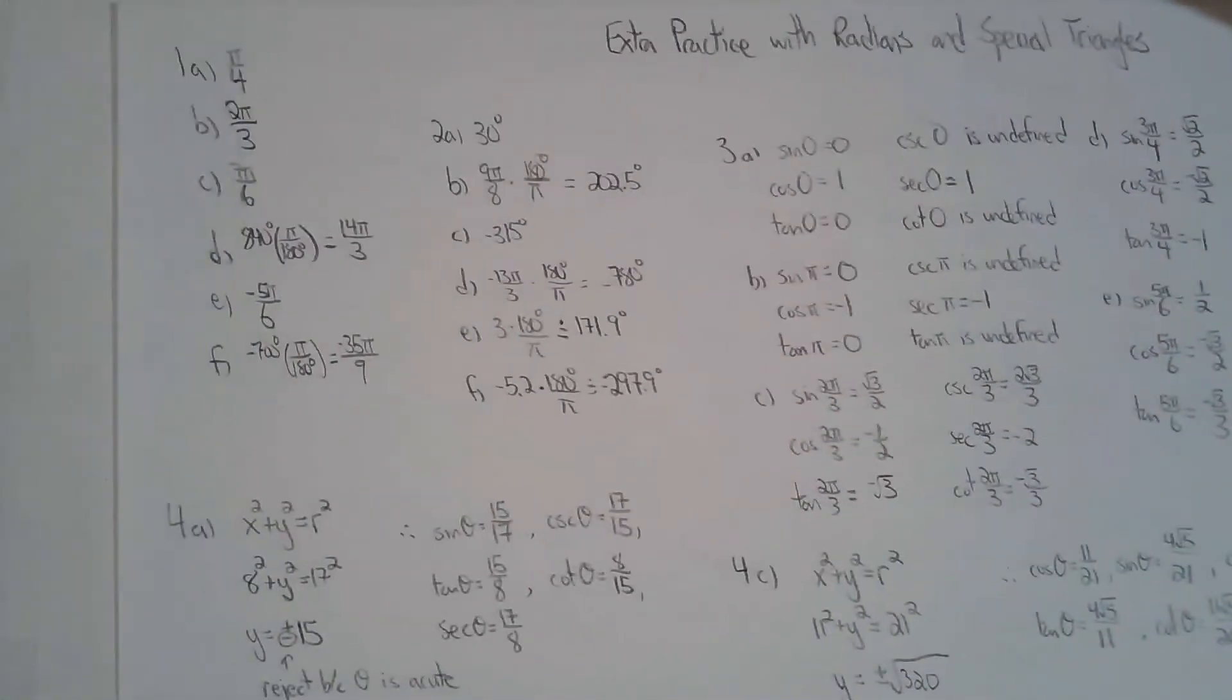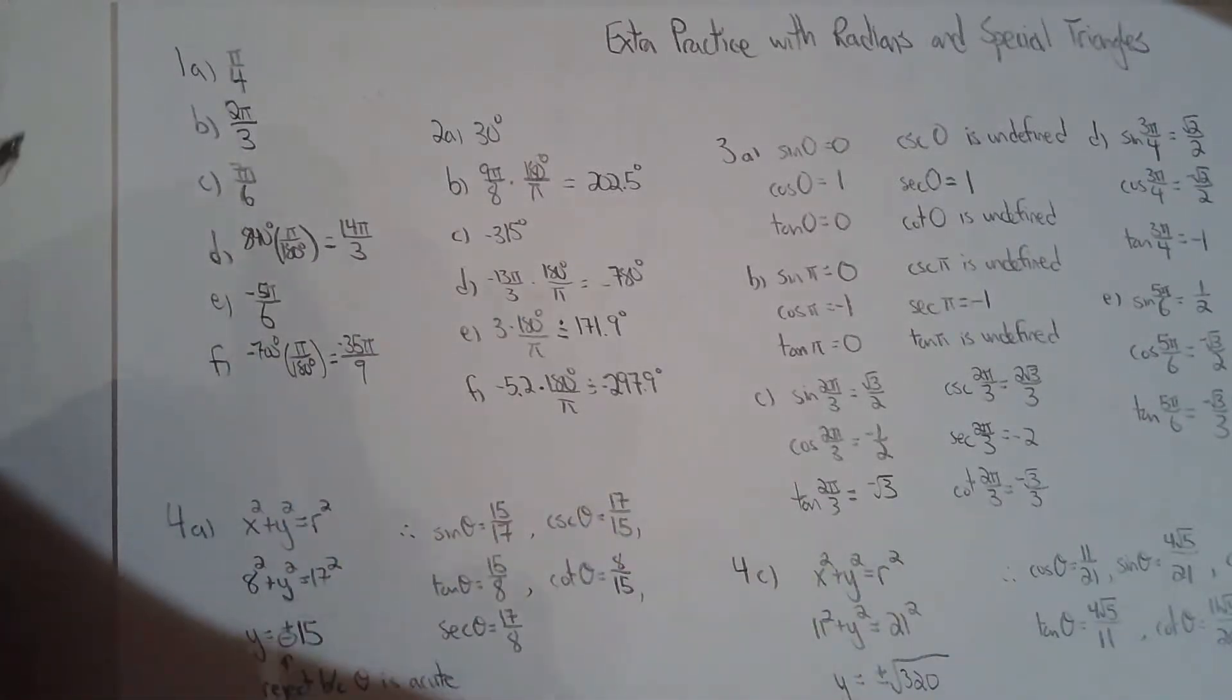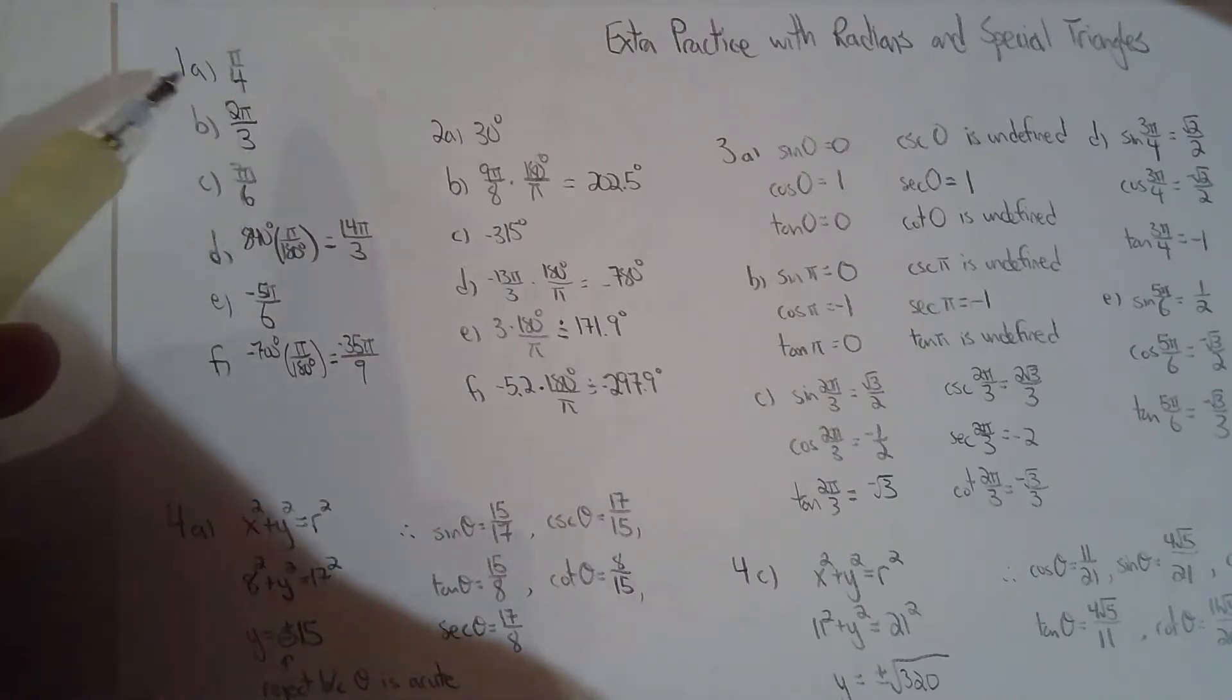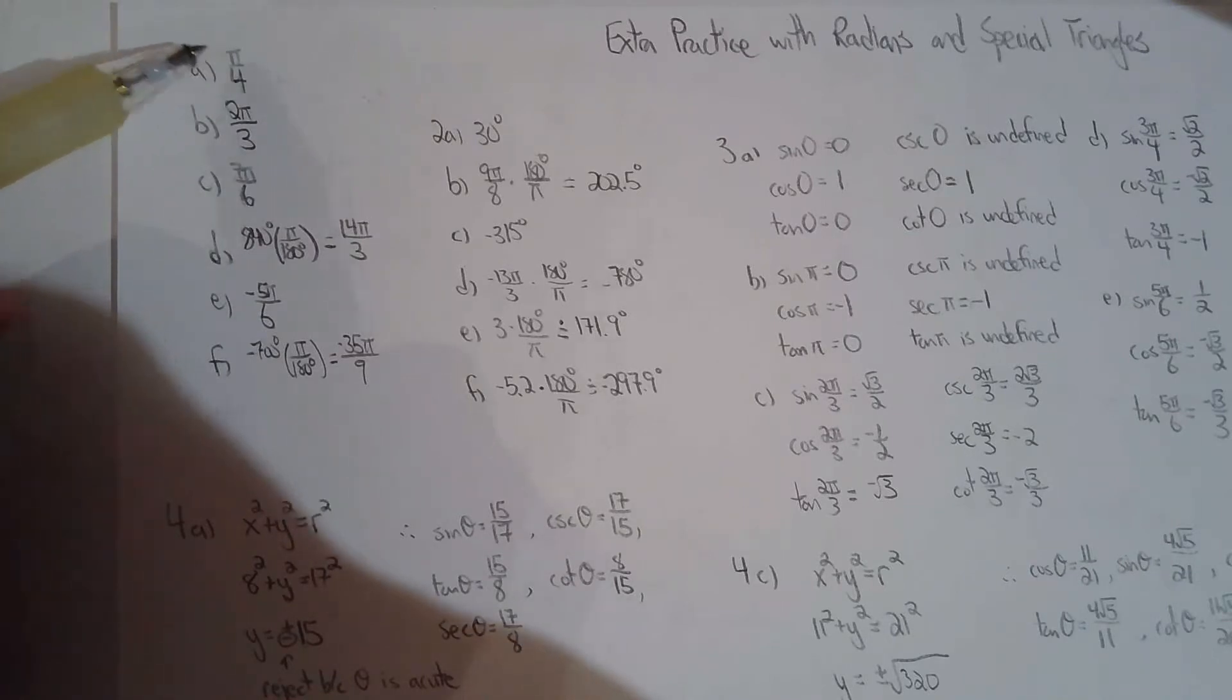Okay, so for the first question they ask us to convert the angle from degrees to radian measure. Some of them you can see I didn't show much work because my expectation is you have those memorized. Like you need to know 45 degrees is π/4 radians, that's a must. I showed work for d and f, but for a, b, c, and e you should really have those ones memorized.